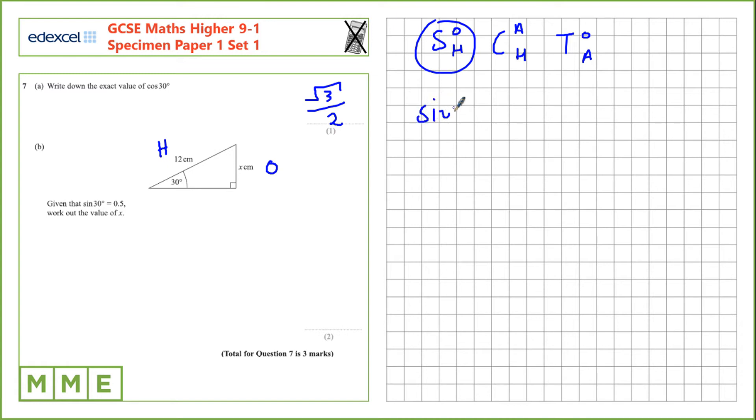Let's write this out. Sine of the angle which in this case is 30 equals opposite x over hypotenuse 12. Let's rearrange. Let's multiply by 12 both sides.